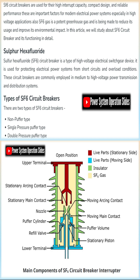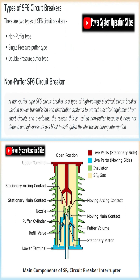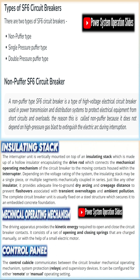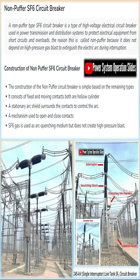One of its primary applications is in SF6 circuit breakers, which are widely used in modern power systems for protecting equipment by safely interrupting high-fault currents. SF6 circuit breakers are categorized into different types based on voltage level and construction — commonly dead tank, live tank, and GIS (gas-insulated switchgear) types.